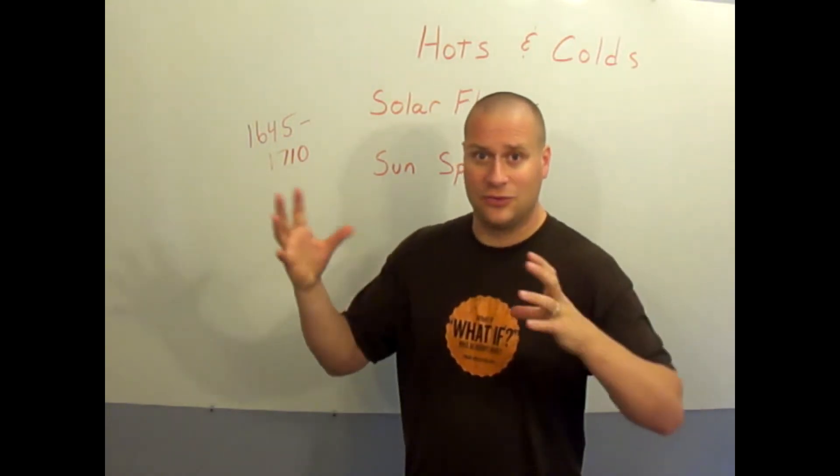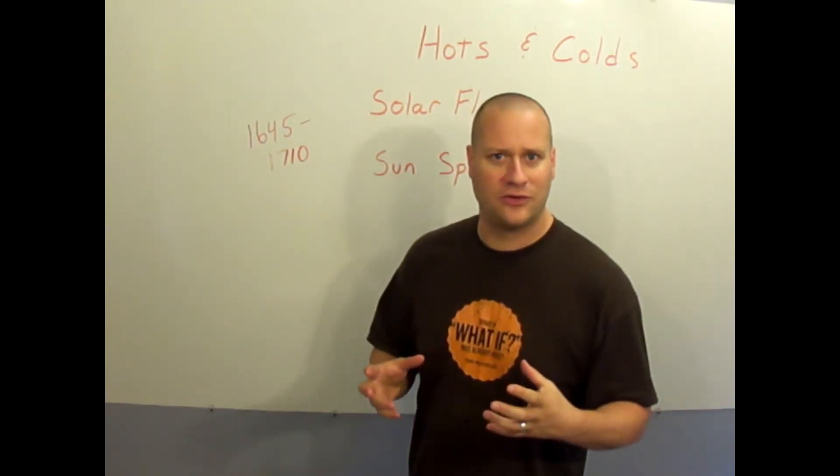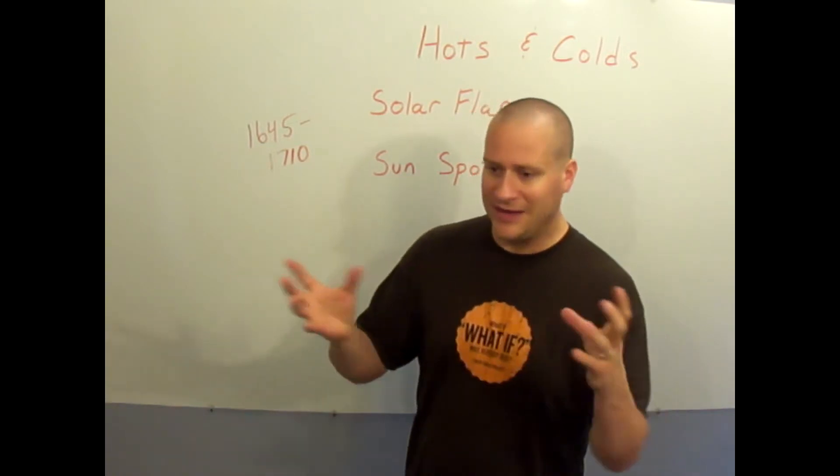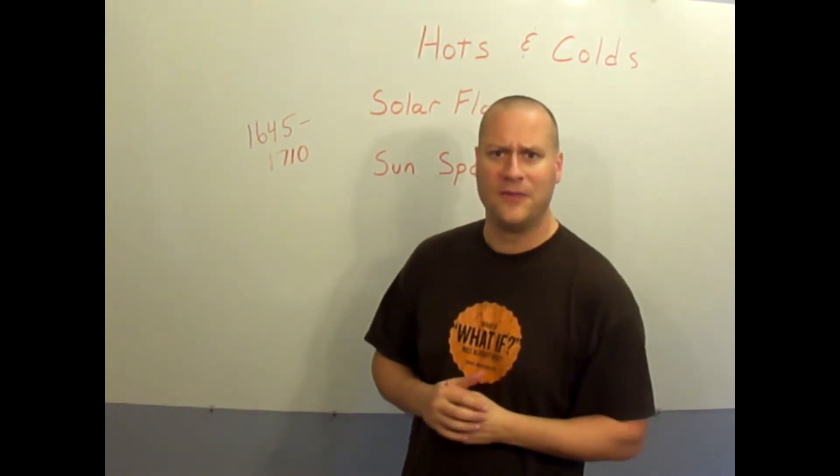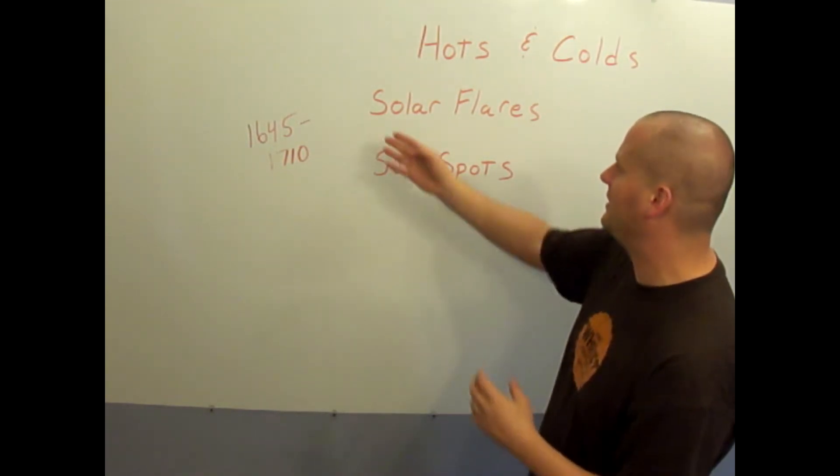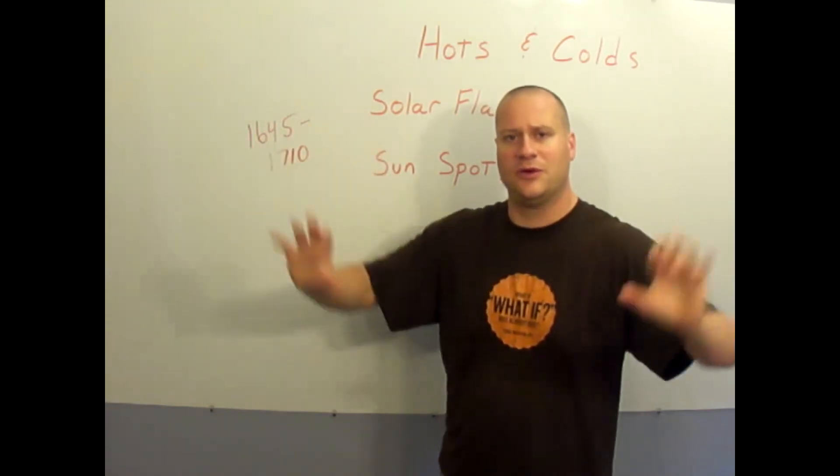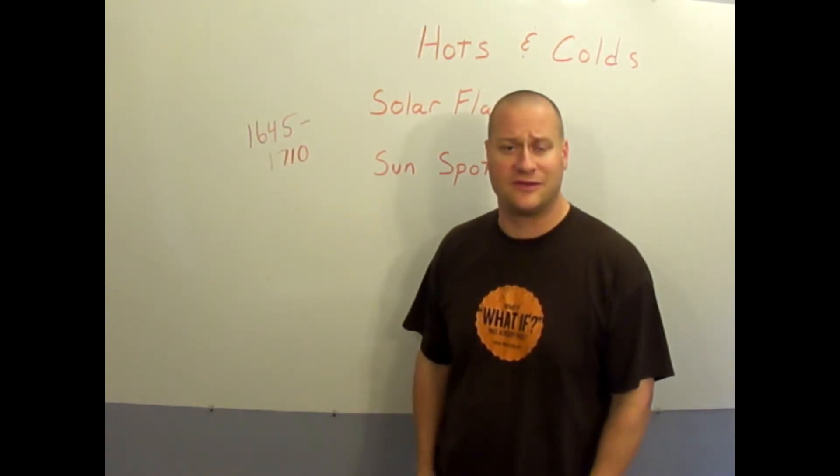It may just be that these sunspots and this cooling and hotting or cooling and warming is the Lord's way of regulating the temperature on the earth. Just some theory there, but understand that the sunspots are cooler spots on the sun and solar flares are big hot eruptions and explosions of the sun out into the rest of the solar system.